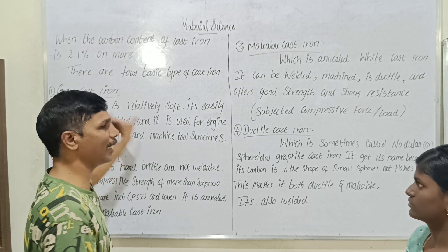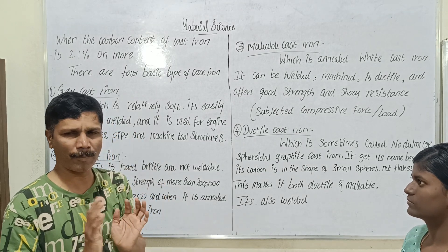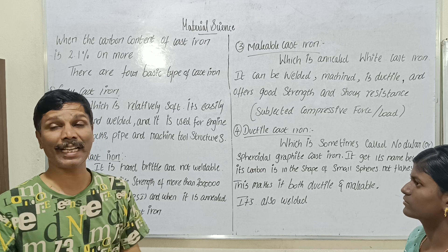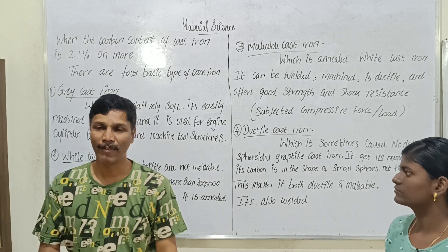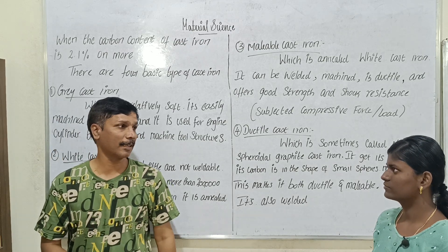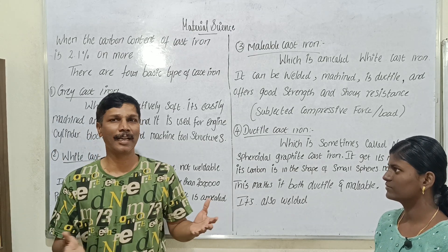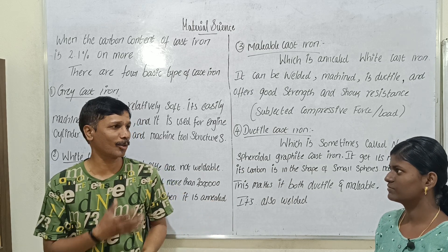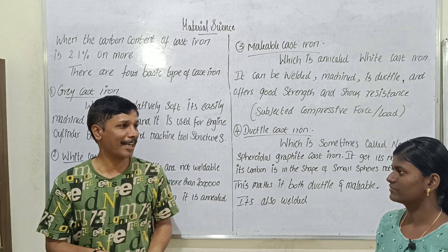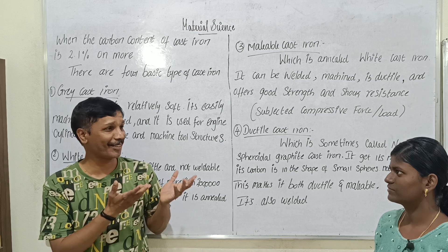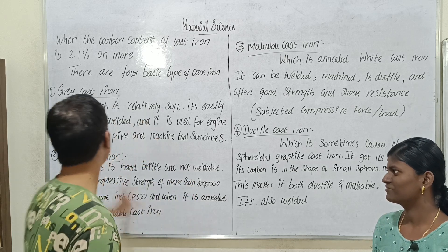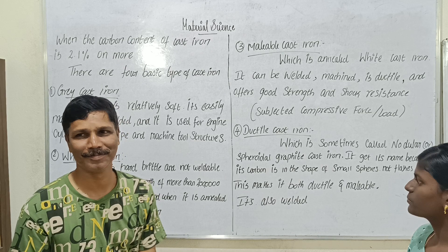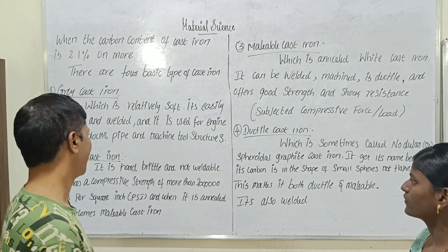We have gray cast iron and we have white cast iron. You can see how many gray colors there are. White cast iron — why is it different? Where is it used?